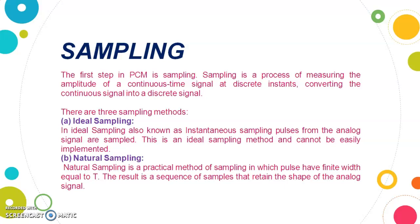Sampling can be performed in three ways: one is ideal sampling, second is natural sampling, and third is flat top sampling. In ideal sampling, also known as instantaneous sampling, we sample the data at every point and convert it into pulse form. However, ideal sampling cannot be easily implemented because analog data is continuous and can have infinite discrete values, making it a tough job to sample all of them. So this method is applied less in practice.